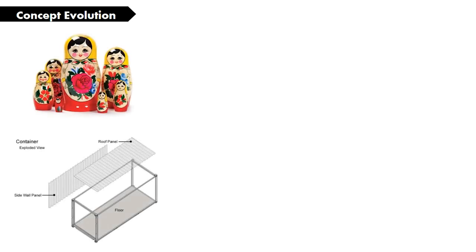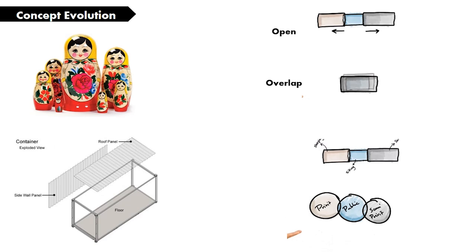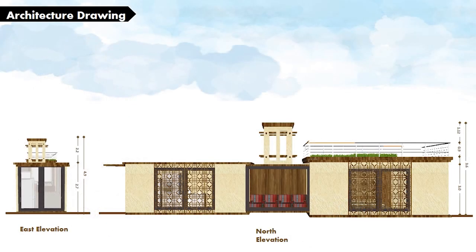The design idea is inspired by the Russian Matryoshka doll, using a standard shipping container with three different sizes, following the doll concept of having the same shape but different sizes placed one inside another. The zoning was made to satisfy the privacy and comfort of residents. For the architectural drawings, the elevations for the north and east directions are shown after the expansion of the Campillion unit.